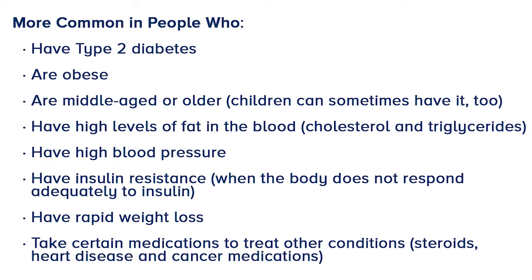So who is at risk for developing NASH? The cause of NASH is really unknown, but researchers do know that it's more common in people who have type 2 diabetes, who have obesity, who are middle-aged or older, though children can also get it. If you have high levels of fat in the blood such as high cholesterol or high triglycerides, high blood pressure, insulin resistance — also called the metabolic syndrome, when the body does not respond adequately to insulin — this is the precursor phase to diabetes. If you have rapid weight loss, this can also cause fat deposition in the liver.